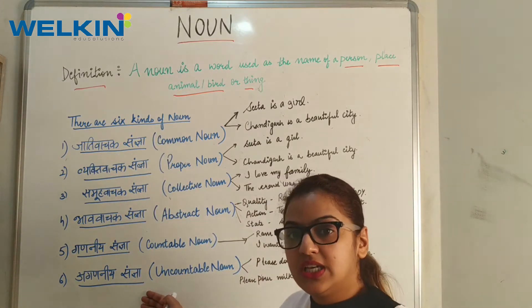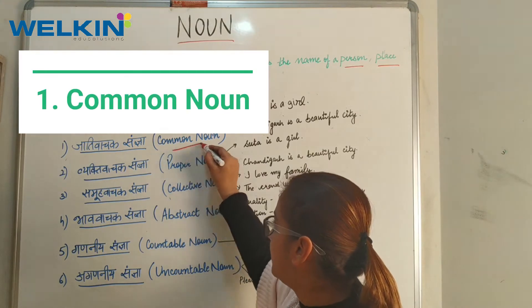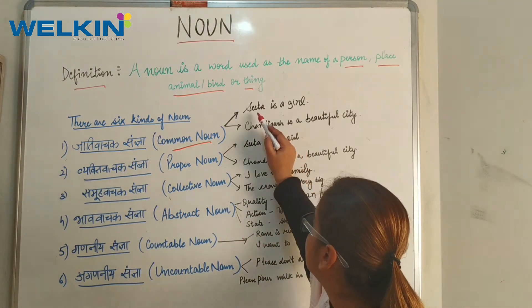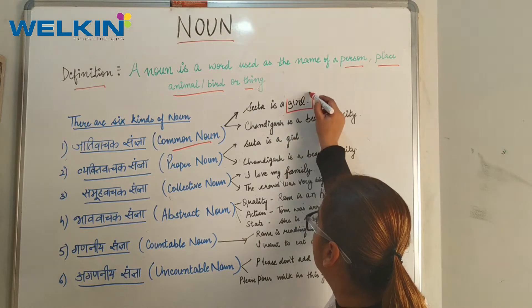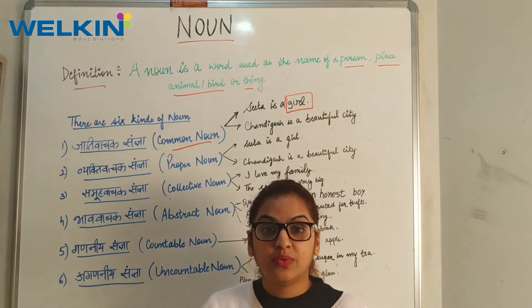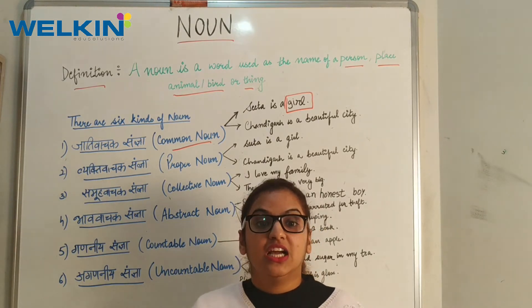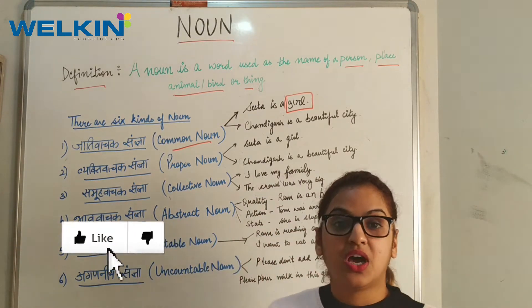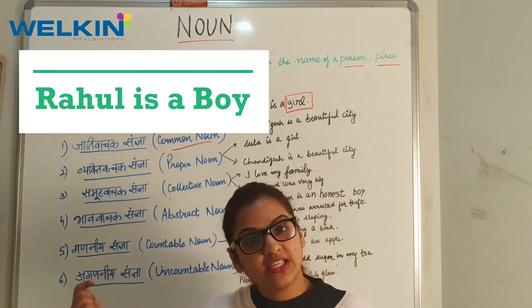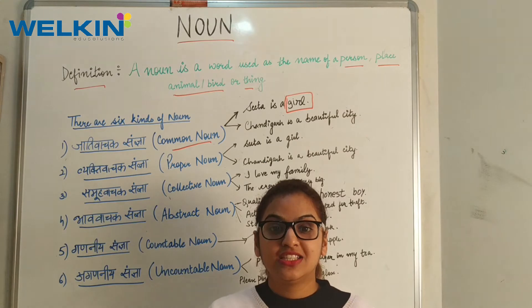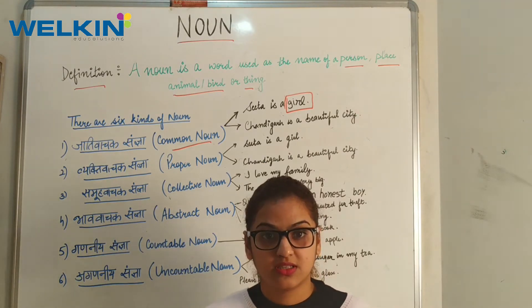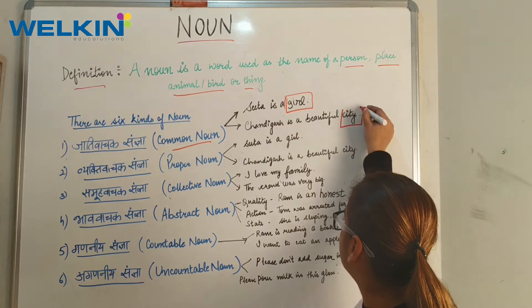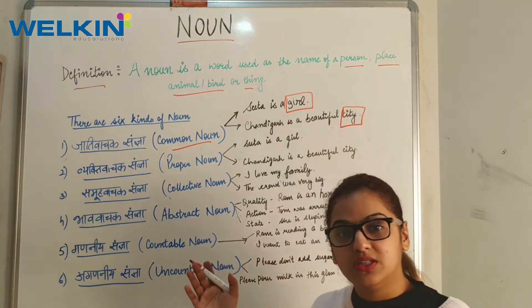Nouns are six kinds. First is Common Noun. Common Noun is called Jati Vachak Sangya in Hindi. For example: Sita is a girl — here 'girl' is a common noun because it is a name common to all girls. Similarly, Rahul is a boy — 'boy' is a common noun because it is common to all boys. Another example: Chandigarh is a beautiful city — here 'city' is a common noun, as it is common to all cities.